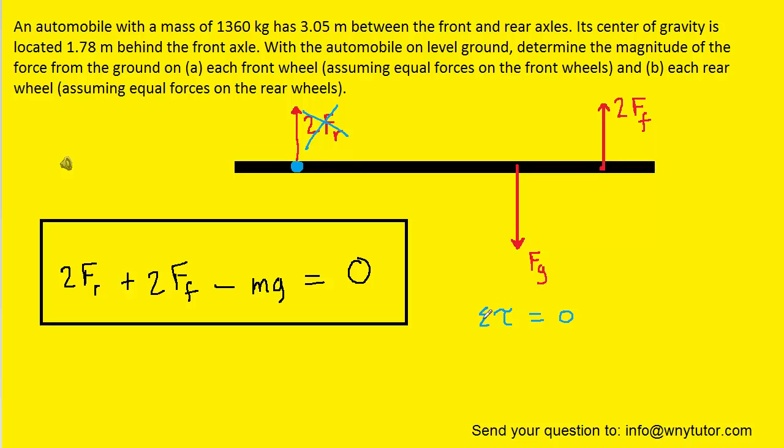And then before we actually plug in we just want to be careful about identifying the distances from each force to that pivot point. Now the question noted that there's 3.05 meters between the front and rear axles. So we know that this distance right here is 3.05.